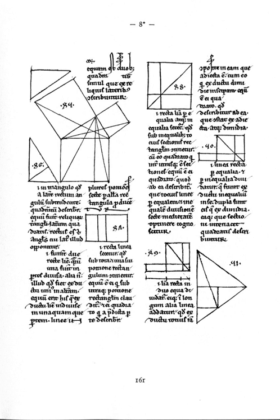Wallpaper groups categorize patterns by their symmetries. Subtle differences may place similar patterns in different groups, while patterns which are very different in style, color, scale or orientation may belong to the same group.